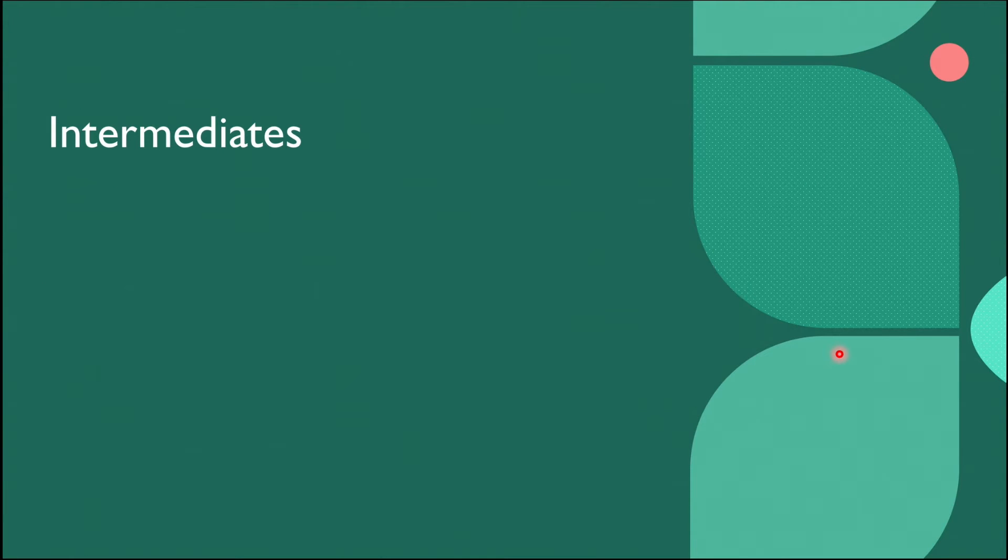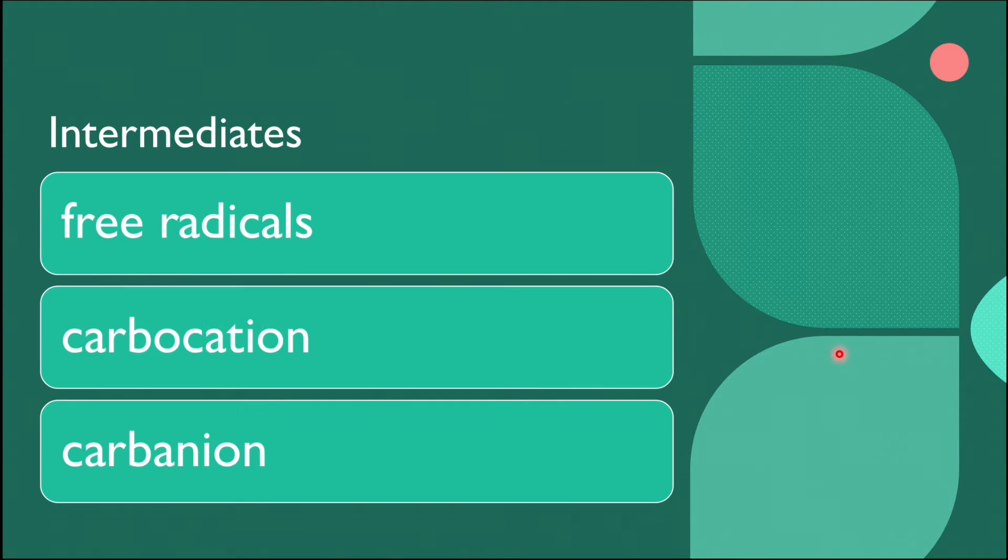In organic reactions, there are three types of intermediates: free radicals, carbocations, and carbanions.